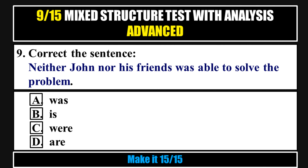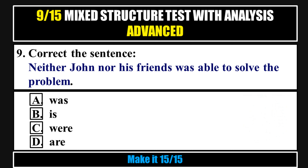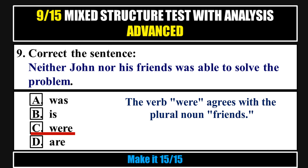Question 9. Correct the sentence: 'Neither John nor his friends was able to solve the problem.' Options: a. Was, b. Is, c. Were, d. Are. Answer: Were. The verb 'were' agrees with the plural noun 'friends'.